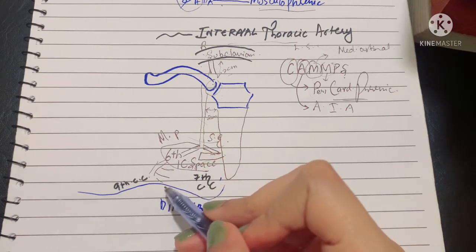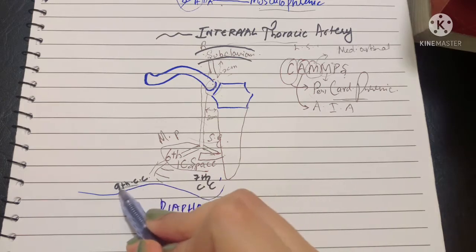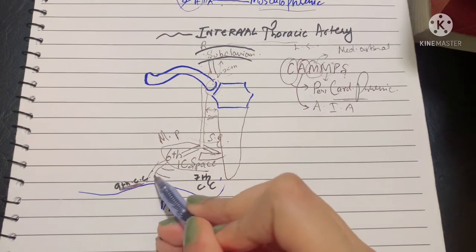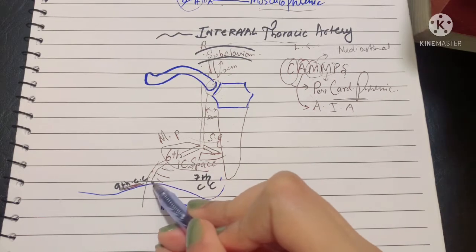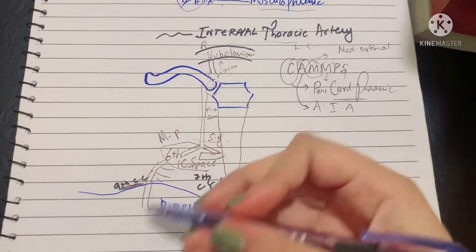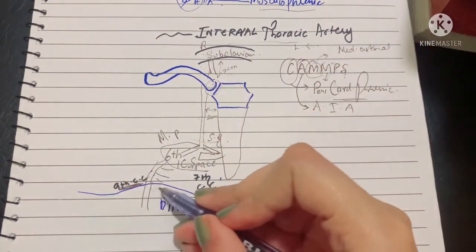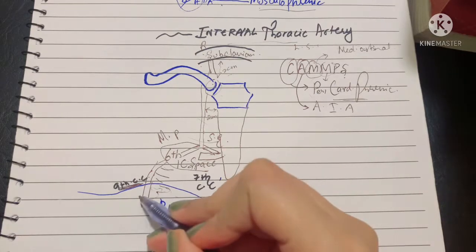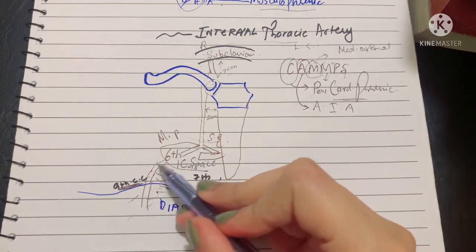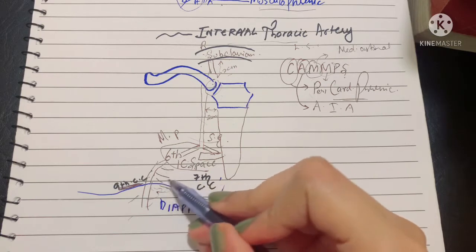At the level of the ninth costal cartilage, it pierces the diaphragm to go into the abdomen. What happens in the abdomen is not our business; we only talk about the thorax. It anastomoses on the undersurface of the diaphragm. What's important is that it gives off the last three anterior intercostal arteries and pierces the diaphragm.